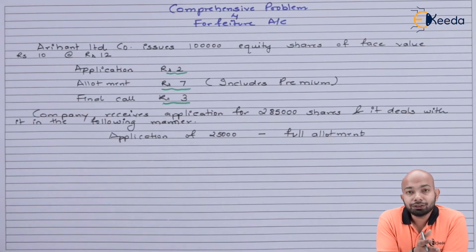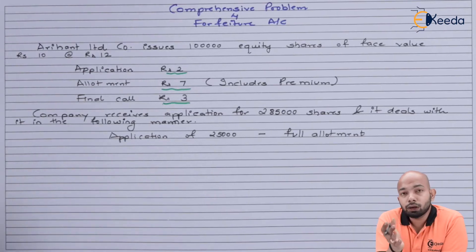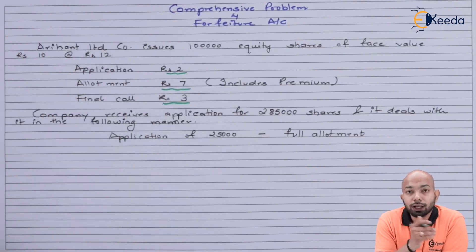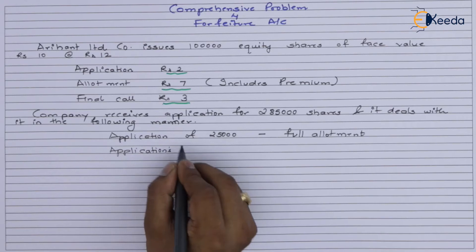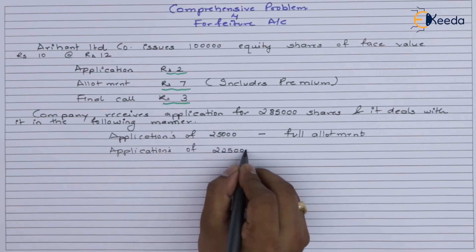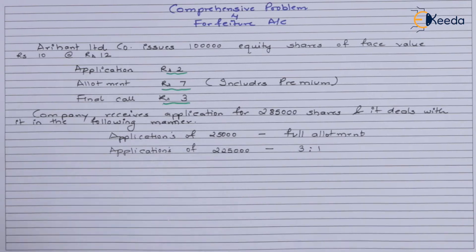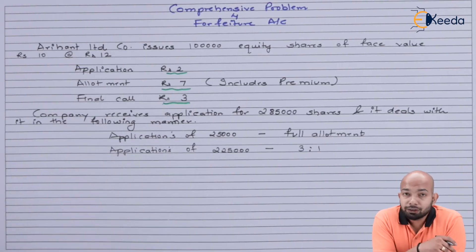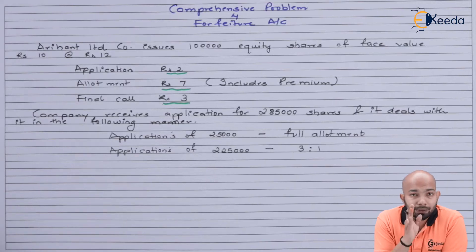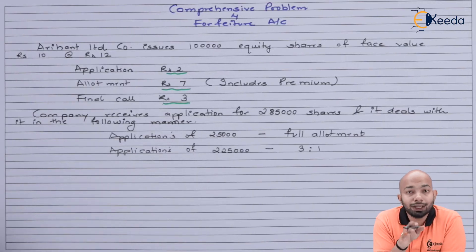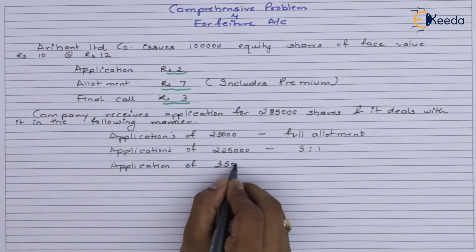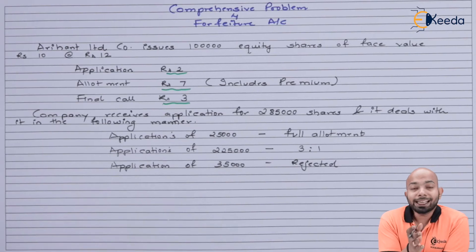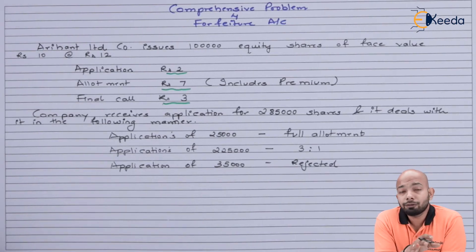Applications for 25,000 shares were completely allotted — full allotment was made for this category. Further, applications for 2 lakh 25 thousand shares were allotted in the ratio of 3 to 1 — every 3 shares applied, you get 1 share. Finally, applications for 35,000 shares were completely rejected or refunded.